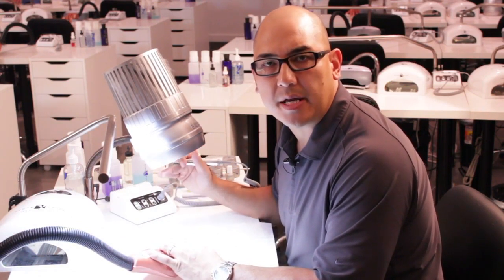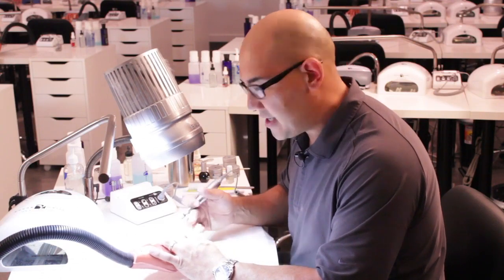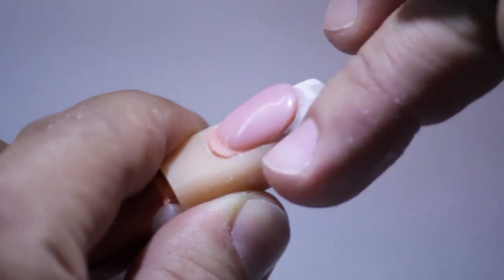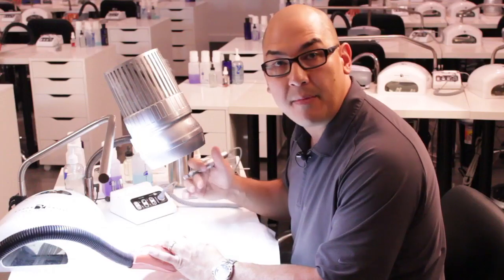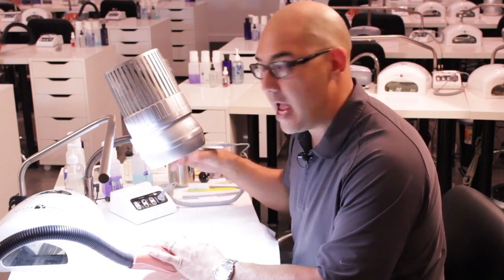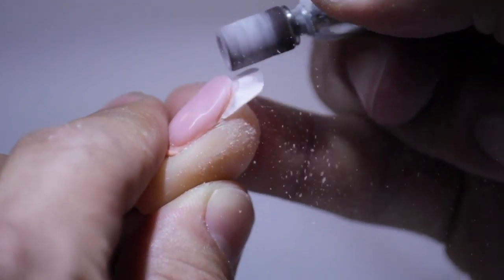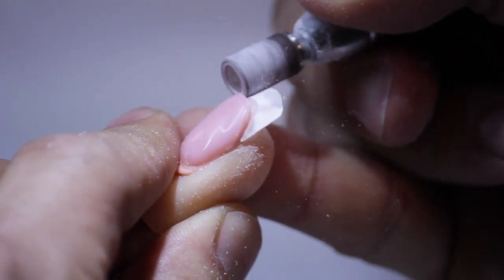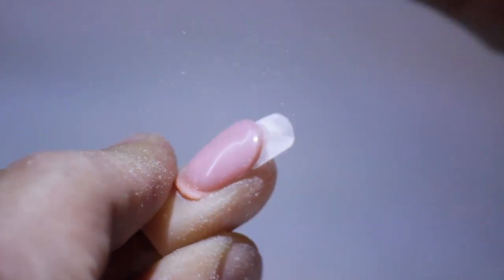Gel does not like to bond to a slick surface. Because I use carbide to come in and cut that out really fast, not only a perfect smile line but it will leave a smooth surface on the free edge. I'm going to rough it up before we get into application. I'm going to take my sanding band and create a nice rough surface for the gel to bond to.